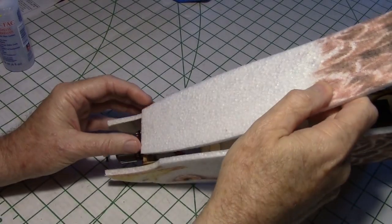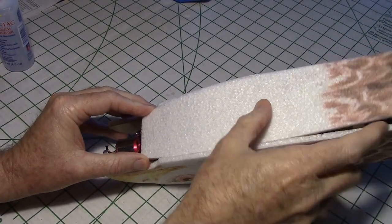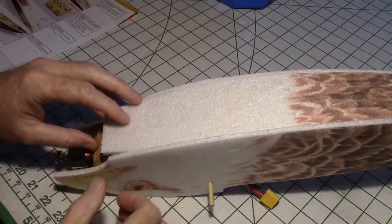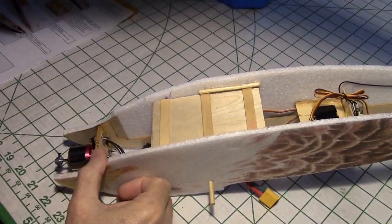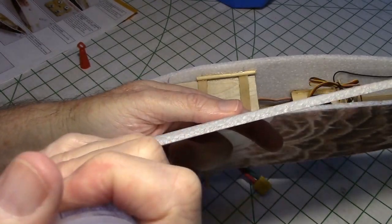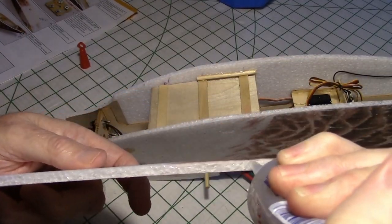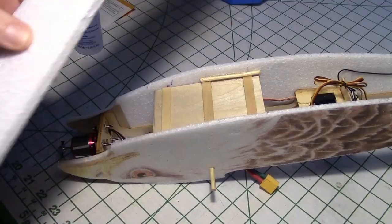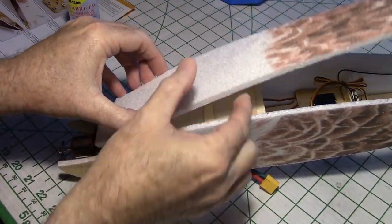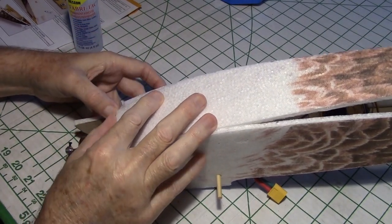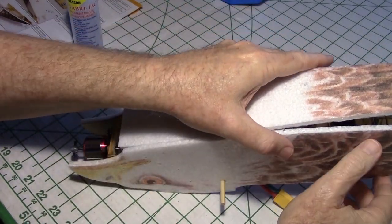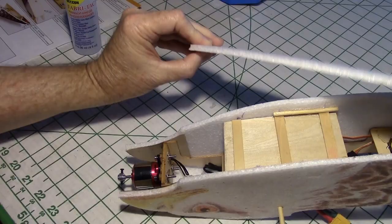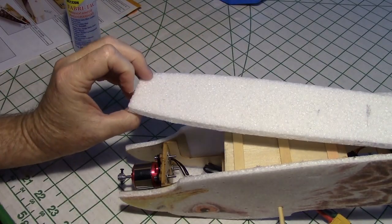Now it's time to test fit the bottom plate and make sure it fits the way you want it to. Once you're happy with the fit, pull it back out and apply some foam tack first to one side and then to the other side. Fit the bottom plate back in the way you had it and press the sides against the plate to make sure the glue adheres all the way down. Then remove the plate and let it tack up for about three minutes.